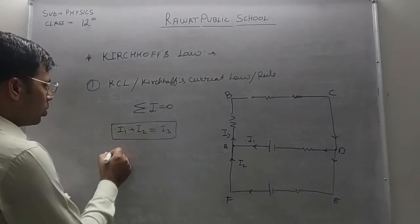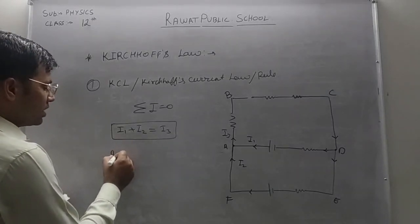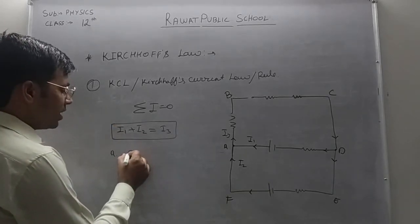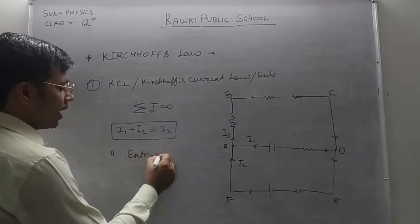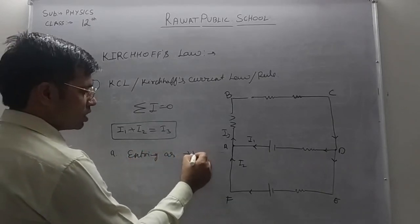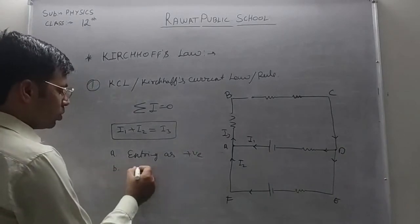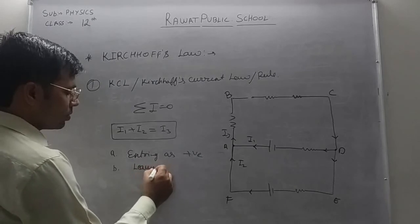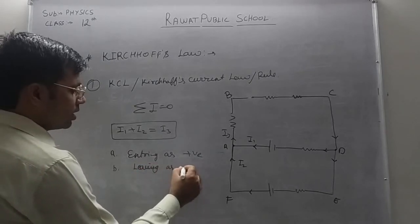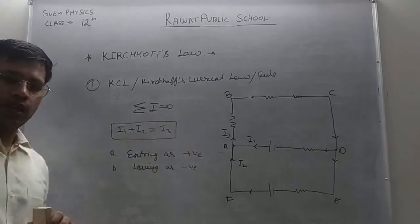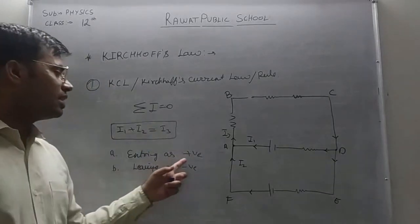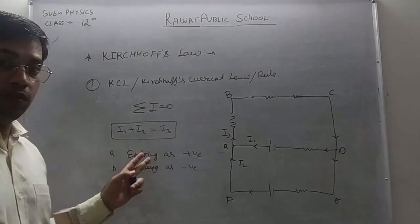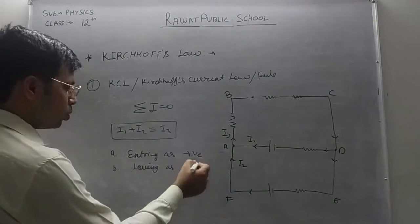This was said by Kirchhoff's rule. Now, there are two unconventions that you should remember. First unconvention is what you can say. You can take current which is entering as positive. Or you can take second rule according. You can take current which is leaving as negative. The current which is entering is taken as positive. And the current which is leaving is taken as negative. Leaving means leaving the junction. So we can make these two rules.